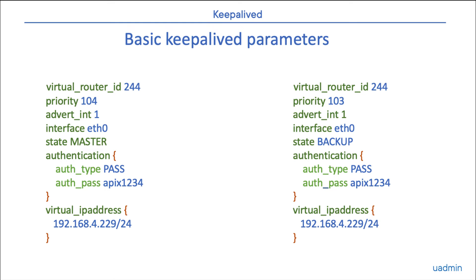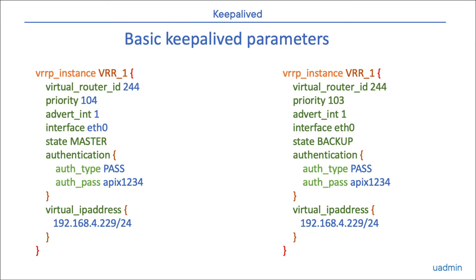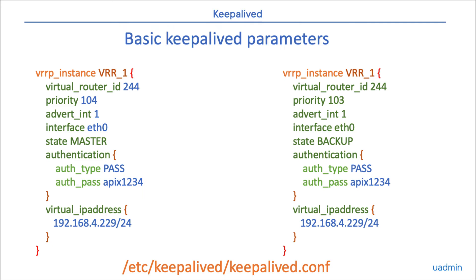As I said, this is a very basic setup — there are many more parameters possible, but we'll keep it basic just to get started. One important thing: Keepalived supports multiple virtual IP addresses with multiple masters and multiple backups, so a single machine can be master as well as a backup for different IP addresses. We group all the above parameters under a single instance called the VRRP instance, and you can give it an arbitrary name. You can have multiple instances in the same Keepalived configuration. The configuration file for these parameters is at /etc/keepalived/keepalived.conf.